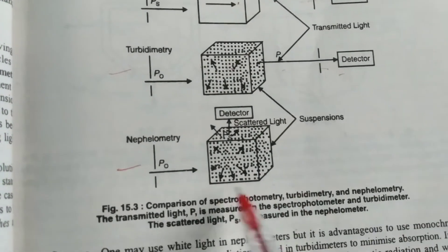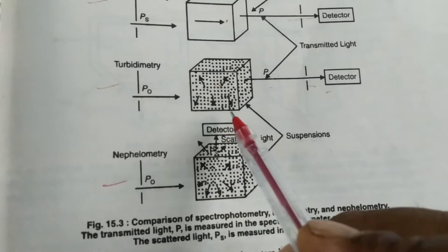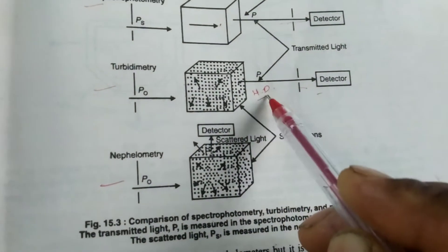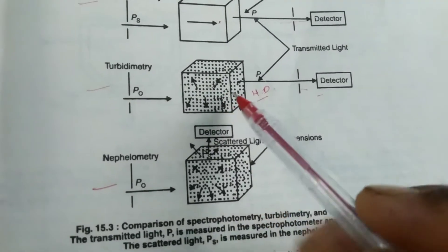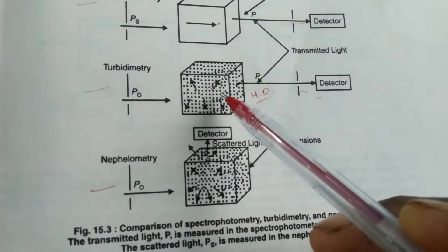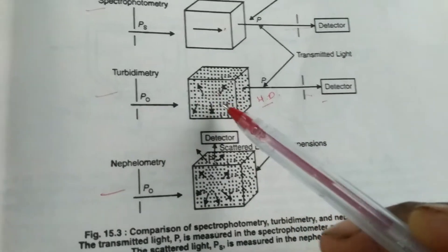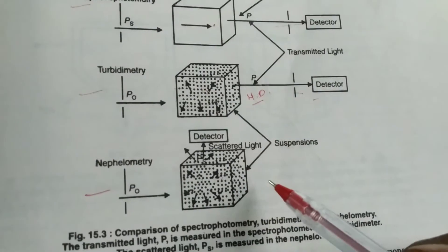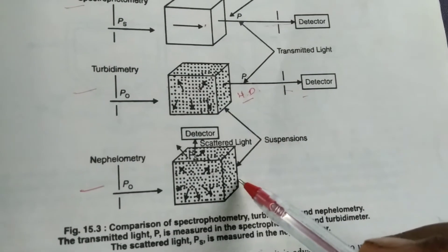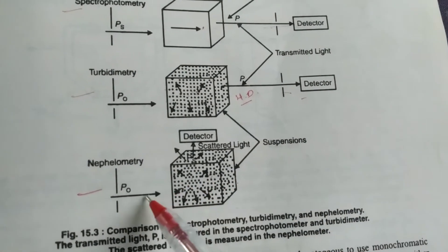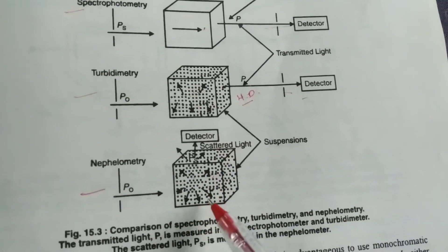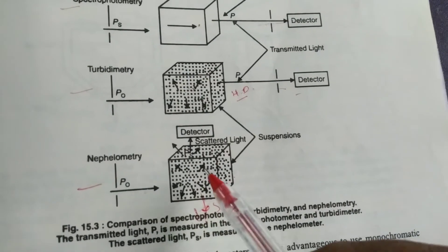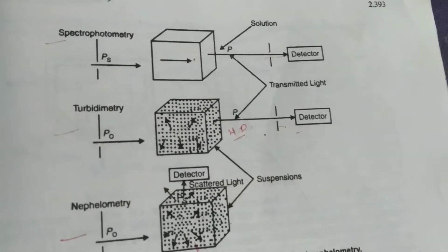When higher dimension particles are present in the solution, we use turbidimetry. When low dimension particles are present in the solution—that is, colloidal particles—we use nephelometry. In nephelometry, the scattering is at 90 degrees and we measure the scattering, but in turbidimetry we measure the absorbance.